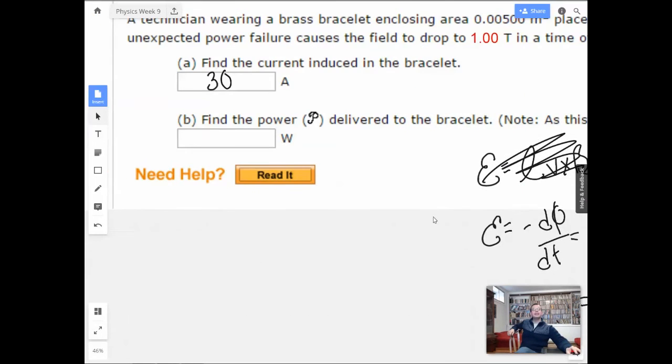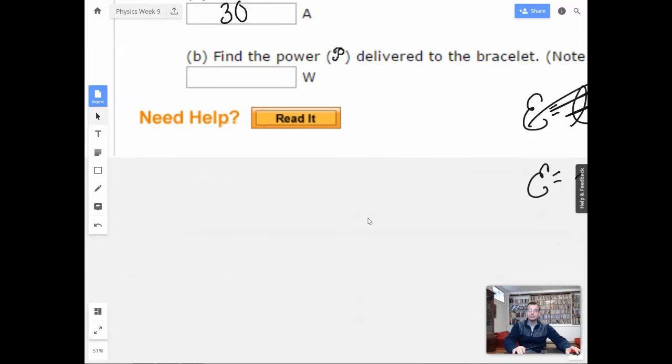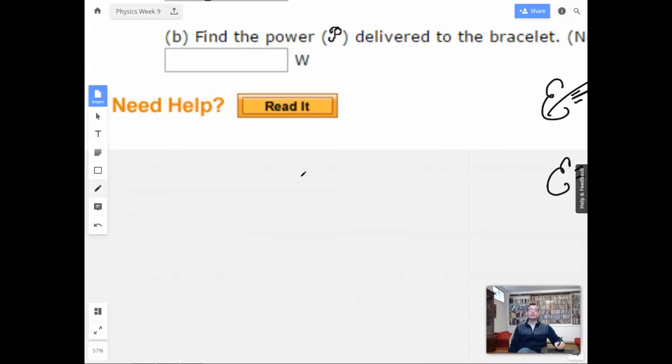Find the power delivered to the bracelet. So, power equals I squared R. In this case, we can also use V squared over R. I just can use I squared R. So, we know we have 30 amps.